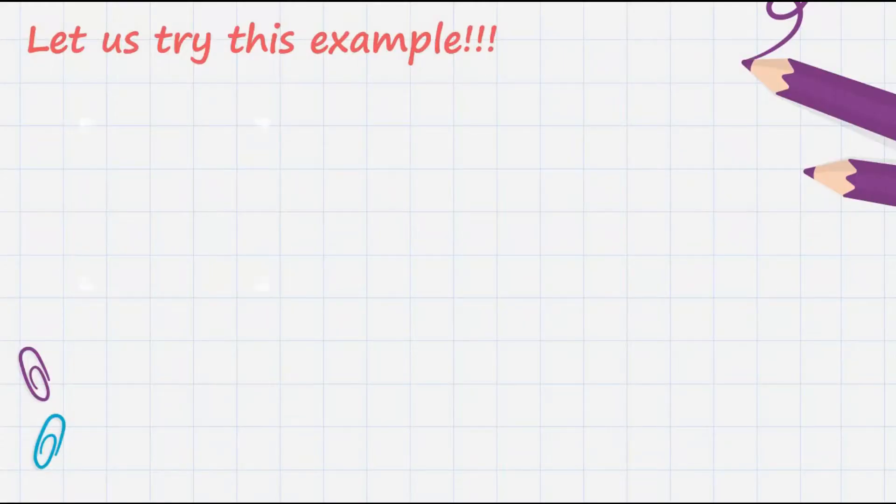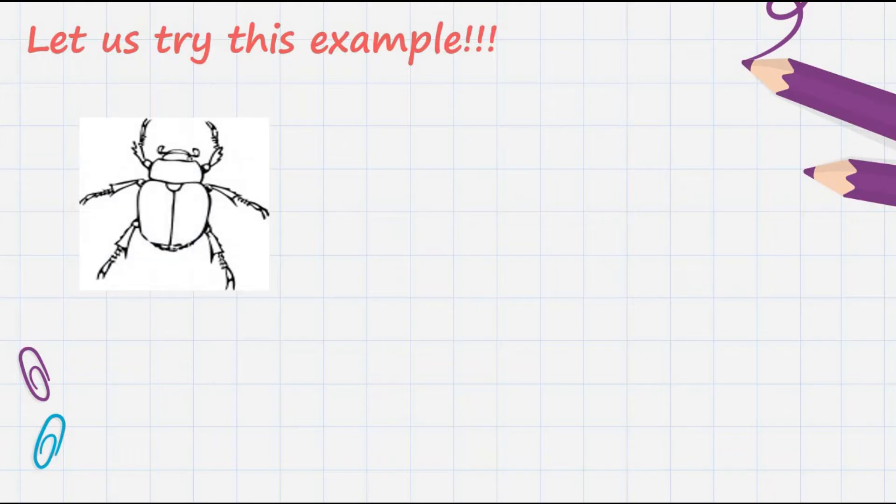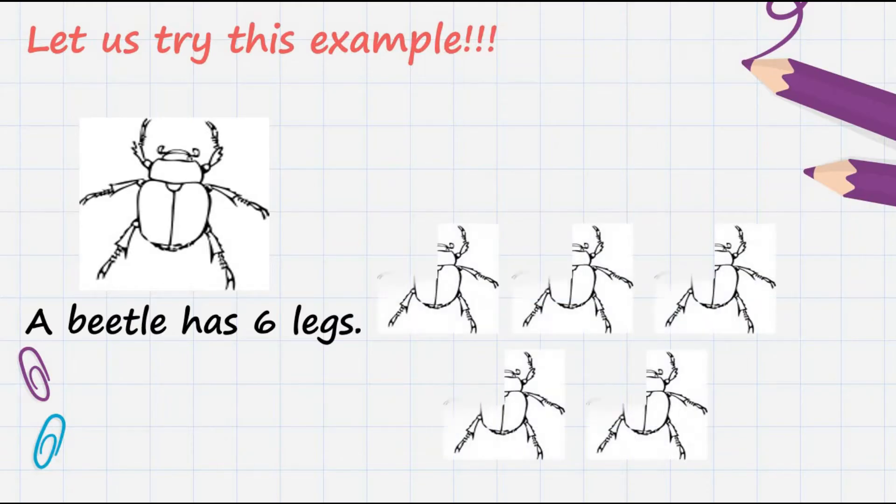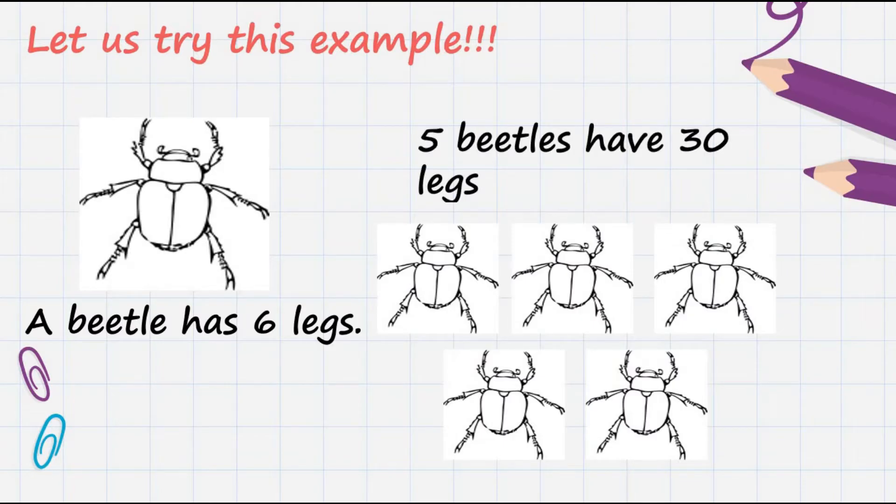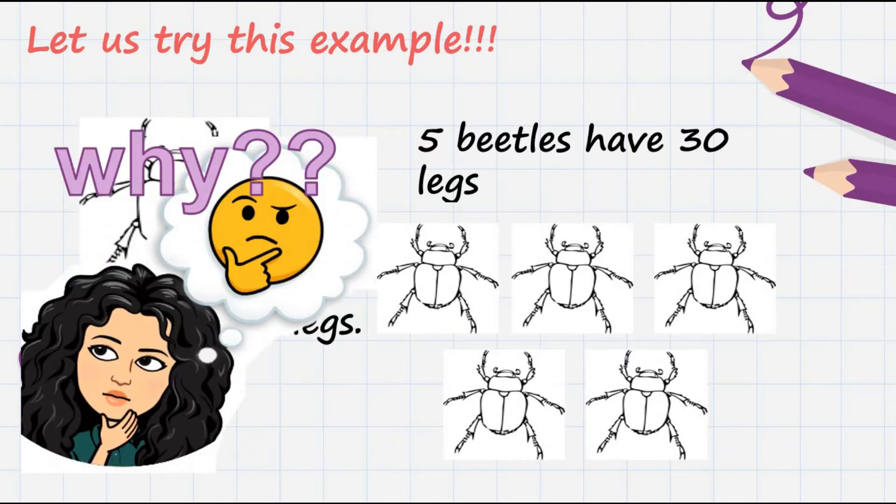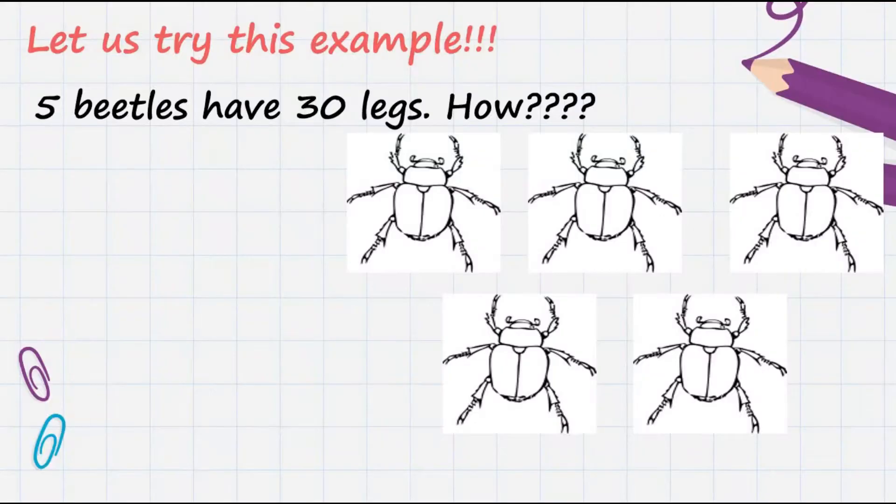Try this example. Do you know what insect is this? Yes, it's a beetle. Beetle has 6 legs. In this example, we have 5 beetles, and 5 beetles have 30 legs. But why? But how?